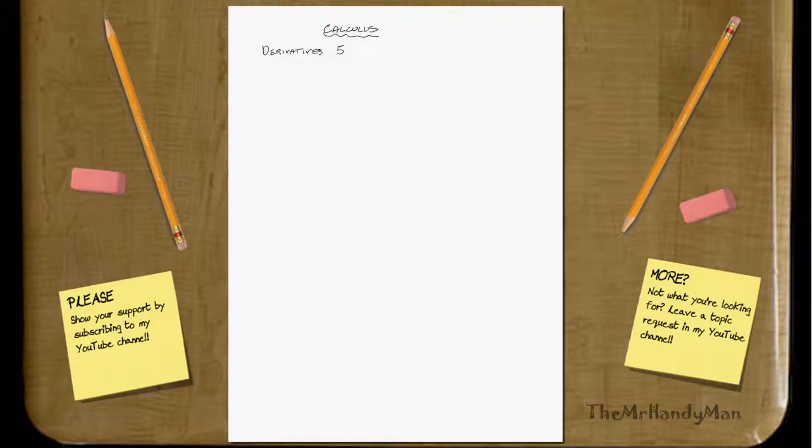Hi there, this is Derivatives 5, and what I'm going to be talking about is, well, what if you have a situation where y equals f of x over g of x?